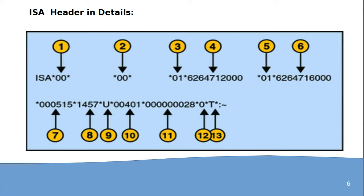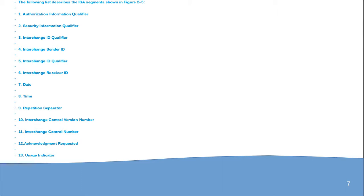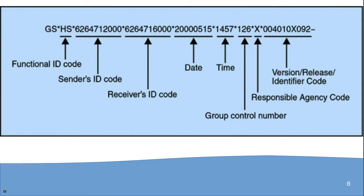The ISA segment has elements ISA01 through ISA14 and beyond: ISA01 is authorization information qualifier, ISA02 is security information qualifier, ISA03 is interchange ID qualifier, ISA04 is sender ID, and further elements include receiver ID, date, time, repetition separator, interchange control number, version number, acknowledgement request, usage indicator, and element terminator.